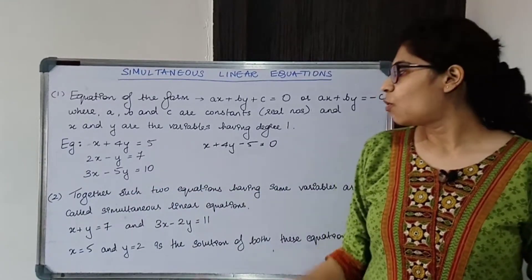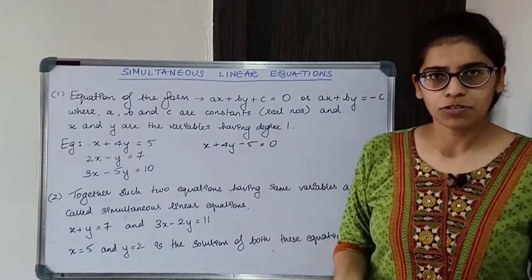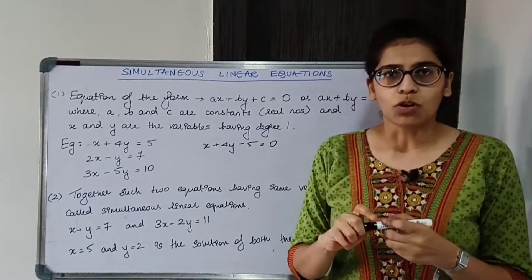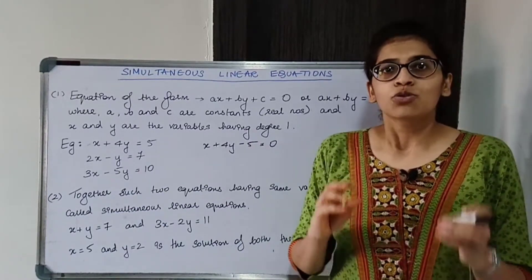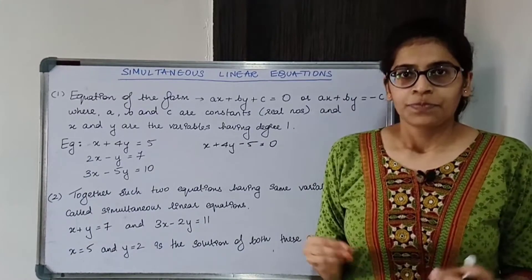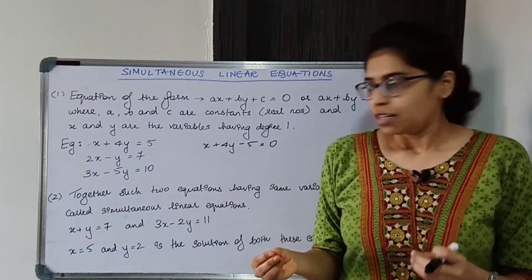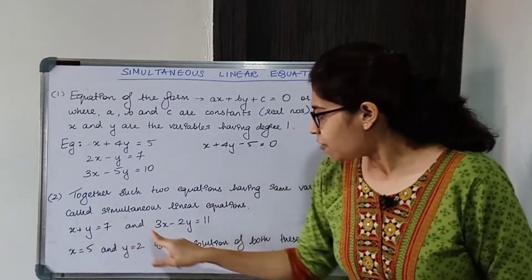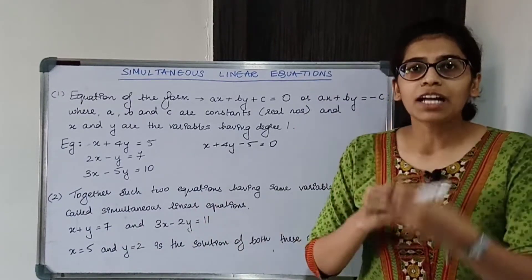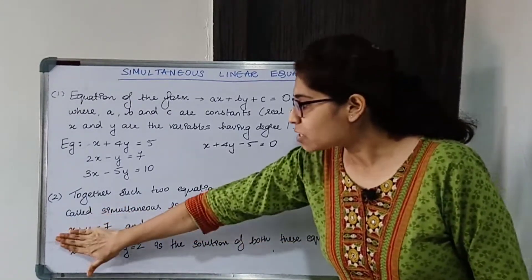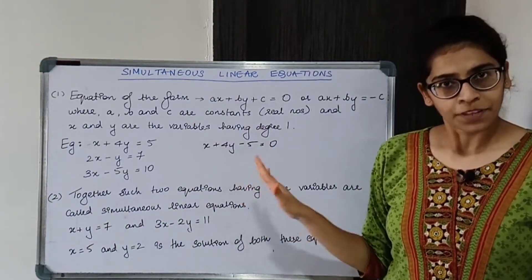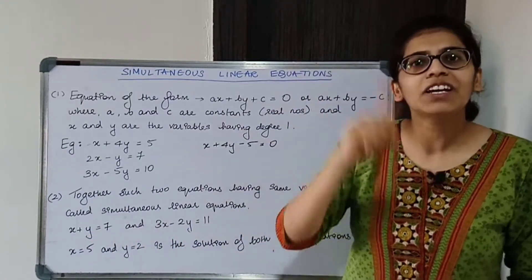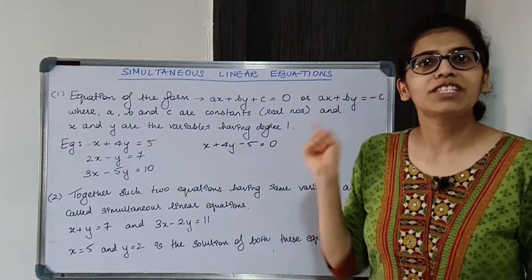So that was all about linear equations. Now moving on to simultaneous linear equations — 'simultaneous' means at the same time. If you consider two linear equations, where X and Y, if you consider a particular value of X and Y, it will be satisfying both equations. You have to make sure both linear equations have the same variables.